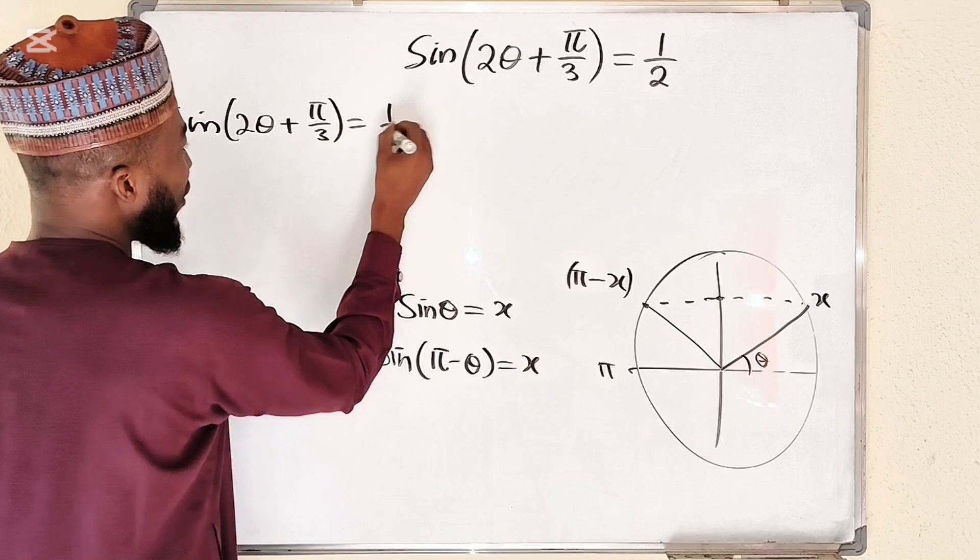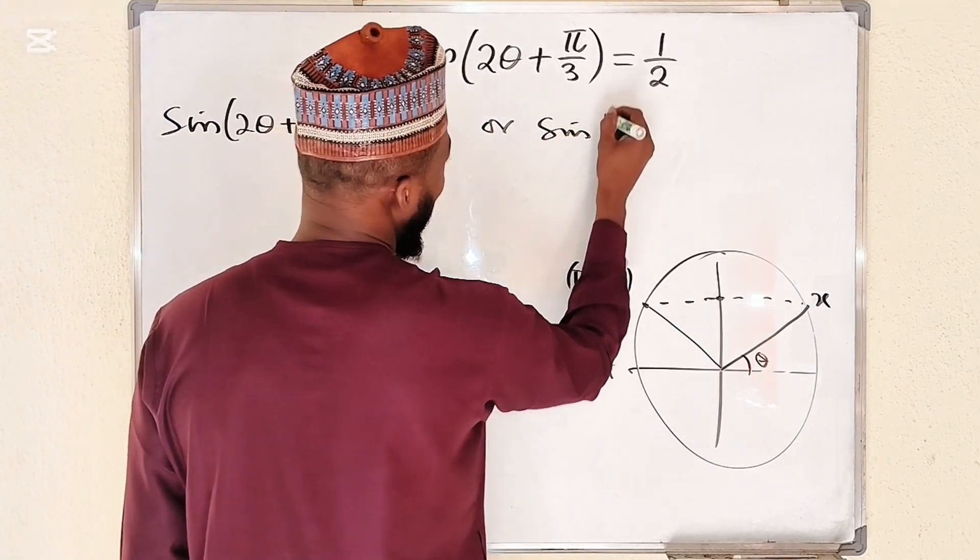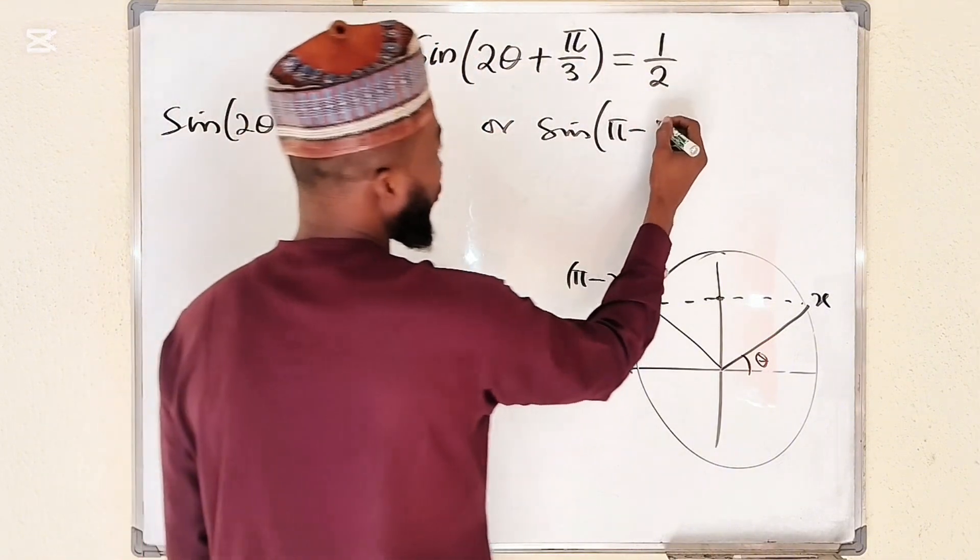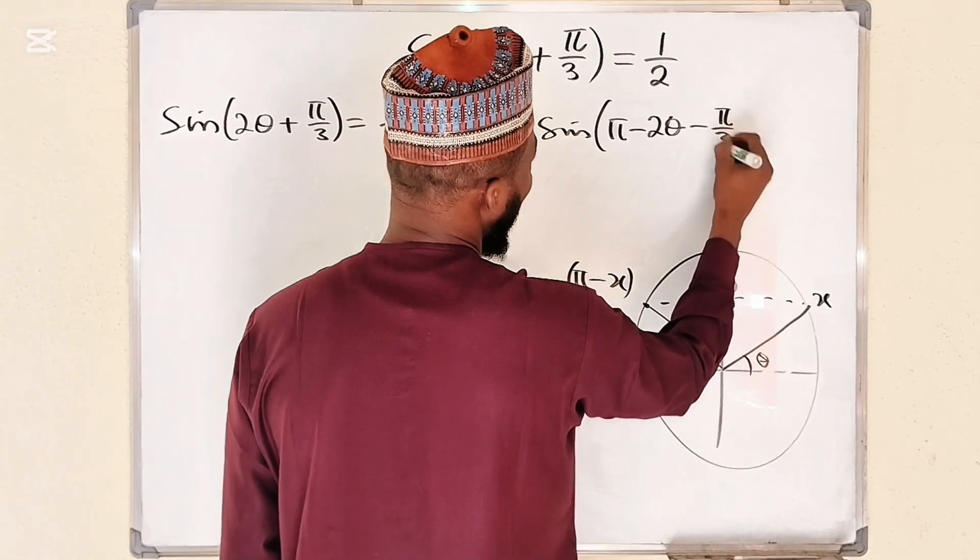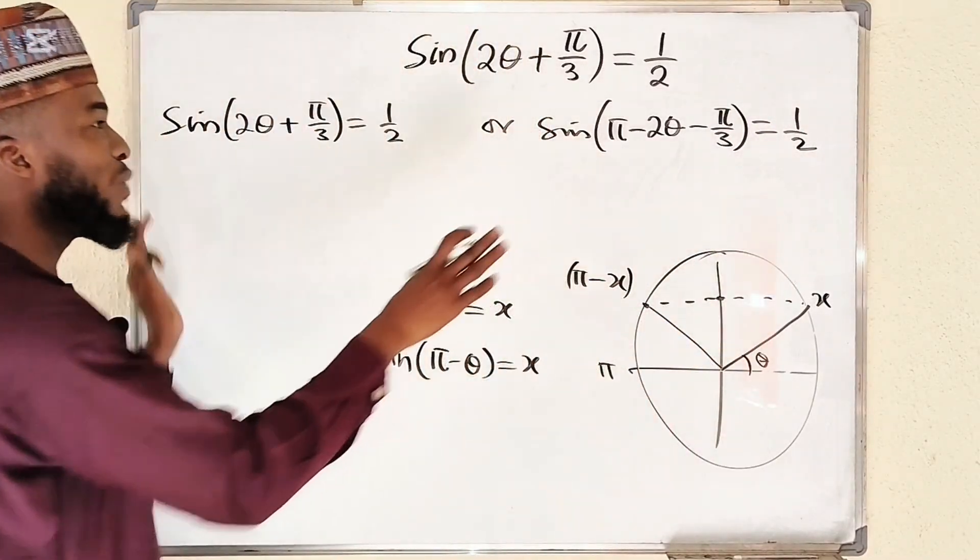or sine of pi minus the whole of this, so the sine will change to 2 theta minus pi over 3, is also equal to 1 over 2. So these are the two equations we are going to solve separately.